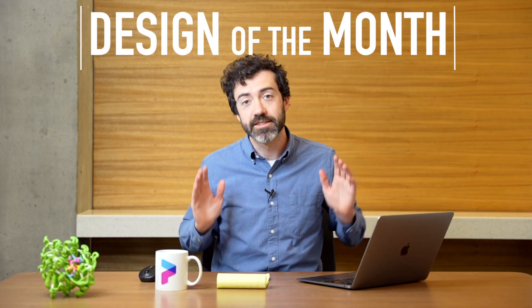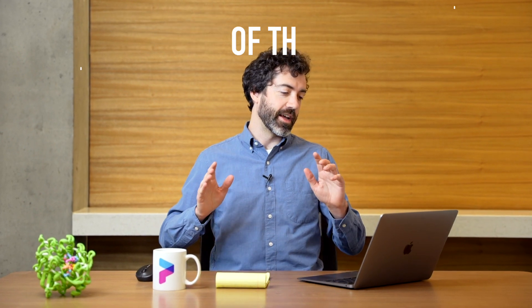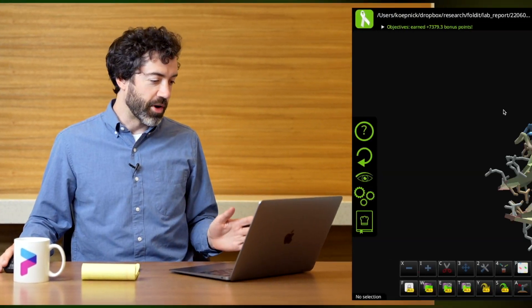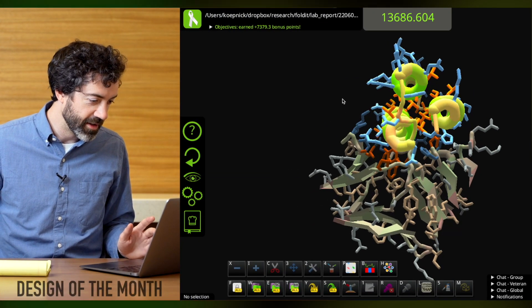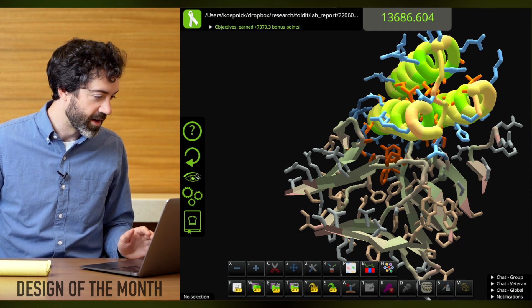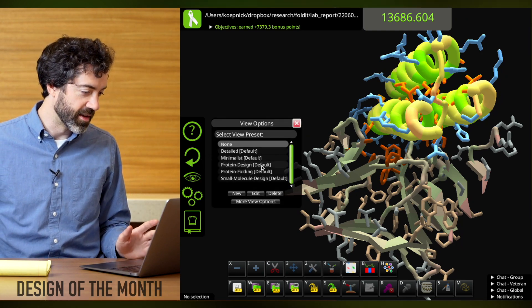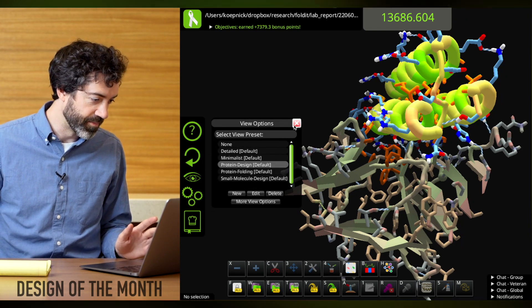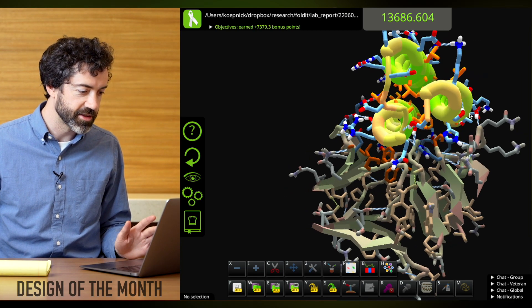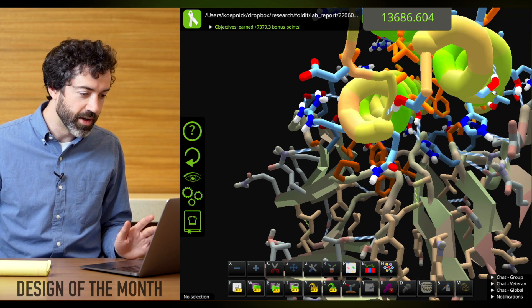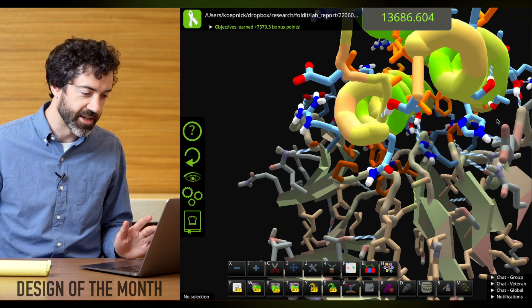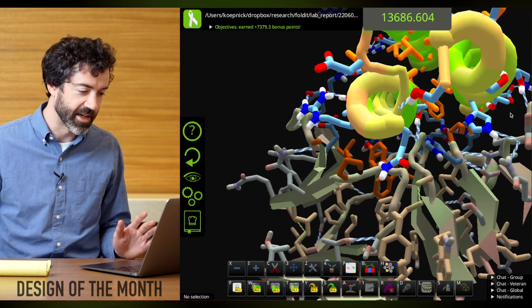And that brings us to this month's design of the month. We have a design this month from puzzle 2141, which is a CD22 binder design puzzle. And this solution is from WBARM1234. Our friend BARM has designed a 3-helix bundle for the CD22 target. I like to look at all my solutions in the protein design view preset. This lets me see all the hydrogen bonds and the blue and red sidechain atoms, polar sidechain atoms, that need to make hydrogen bonds.